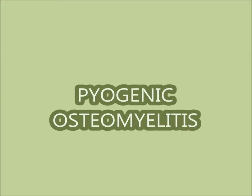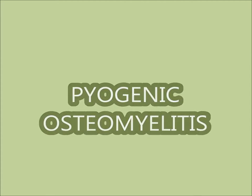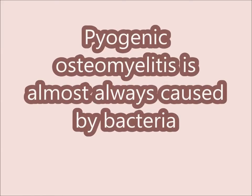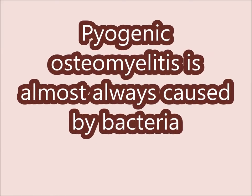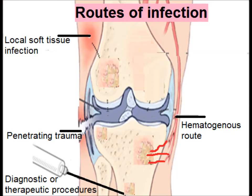Now we will discuss pyogenic osteomyelitis. Pyogenic osteomyelitis is almost always caused by bacteria. The routes of infection are penetrating trauma, local soft tissue infection, hematogenous route, or diagnostic or therapeutic procedures. By these routes, the microorganism reaches the site of bone.